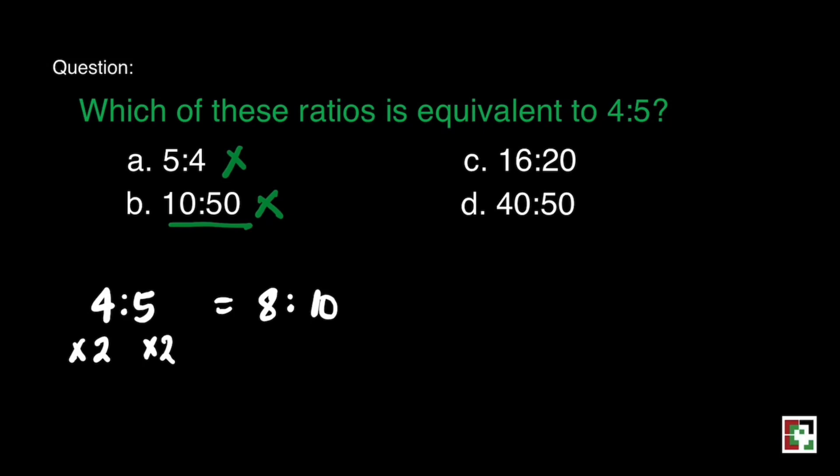It is not our answer. How about letter C? It is 16 is to 20. Let's try to multiply 4 is to 5 by 4. Maybe it is also equivalent to 16 is to 20. 4 times 4 is equal to 16, and 5 times 4 is equal to 20. Oh, that is a perfect match. So we have an answer.